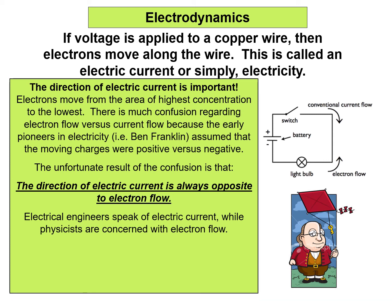In the circuit diagram, the current flows in one direction while the electrons flow in the opposite direction — which is confusing. The direction of electric current is always opposite to electron flow. This is because early pioneers like Ben Franklin assumed the moving charges were positive, not negative. As we now know, it is the negative charges that move. The direction of electric current is always opposite to electron flow.